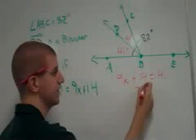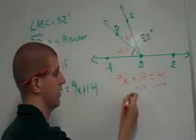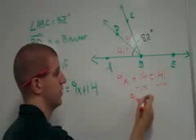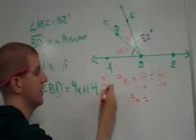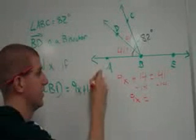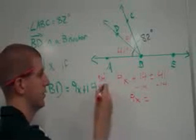We subtract 14. So, when we do that, 41 minus 14. You can use a calculator. 27.